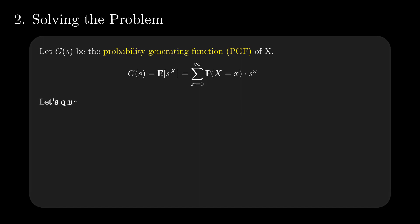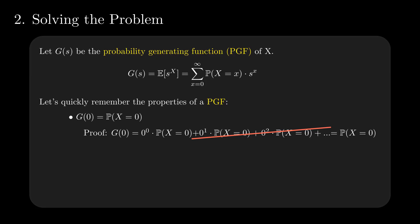Here's a concise refresher of the properties of a PGF, alongside brief proofs. G of 0 equals the probability that X equals 0. Replace s with 0 in the expanded formula. All terms starting with the second one are equal to 0. And knowing that by convention 0 to the power of 0 is 1, the remainder is probability of X equals 0.